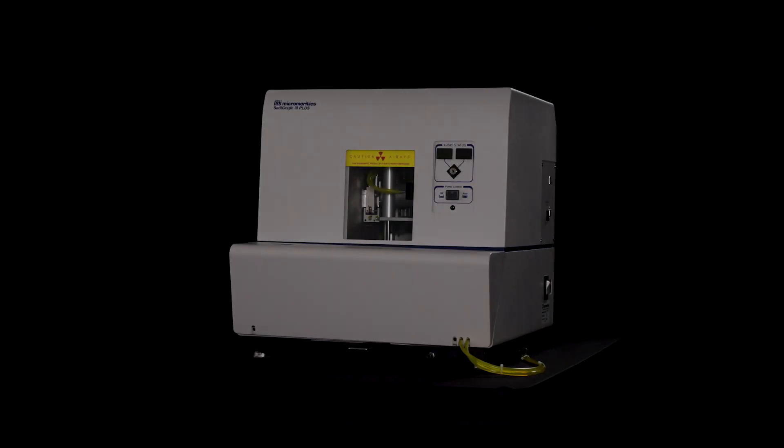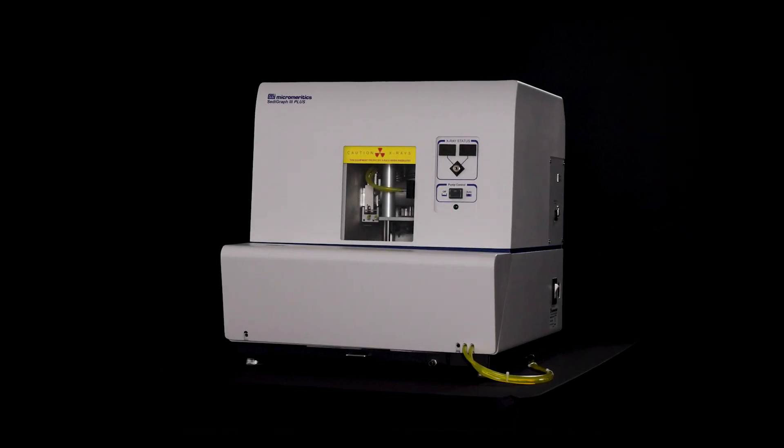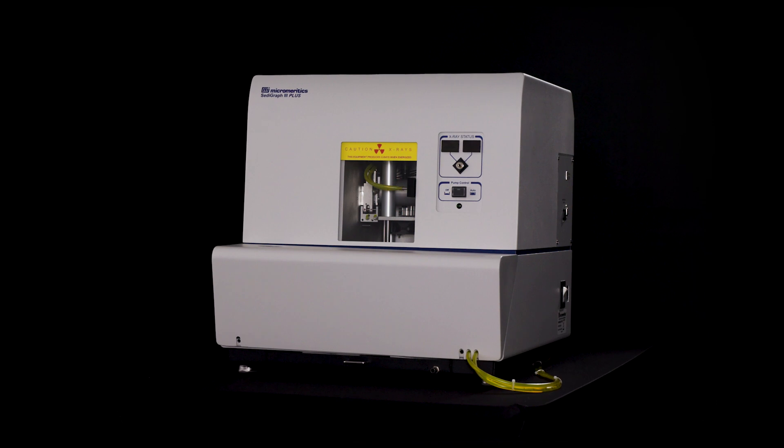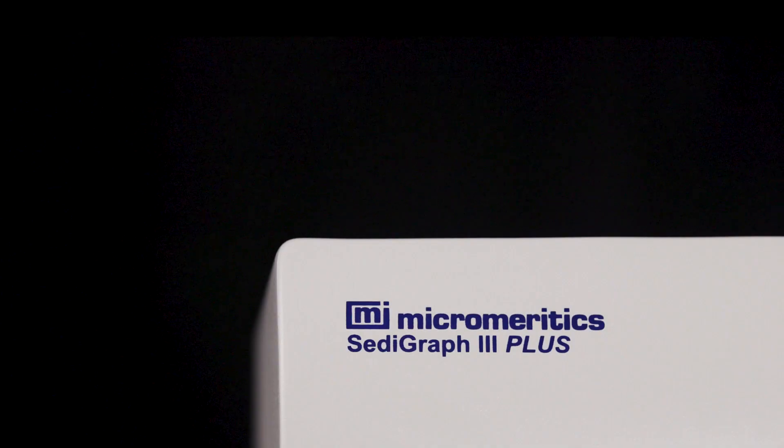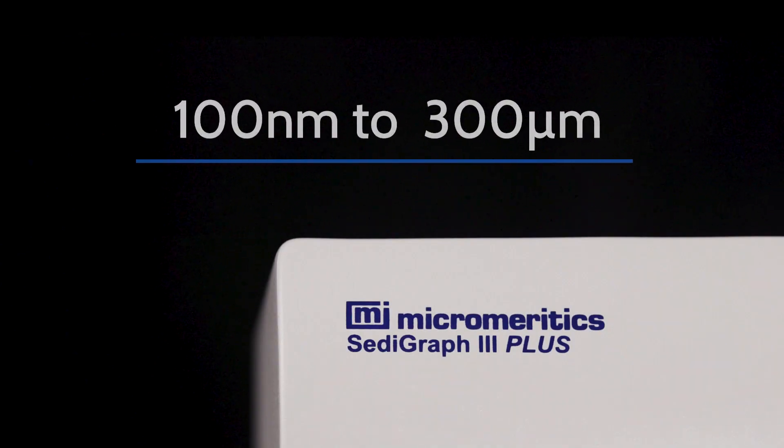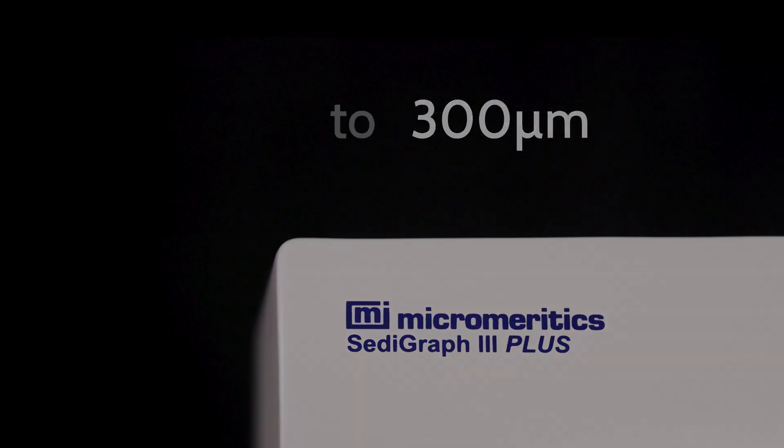The Micromeritics Setagraph 3 Plus is a high resolution particle size analyzer for mining and minerals capable of measuring particles from 100 nanometers to 300 microns.